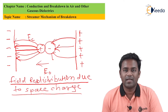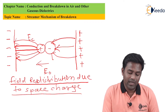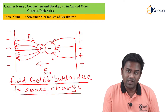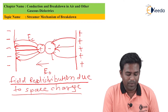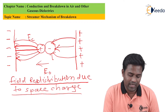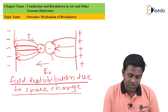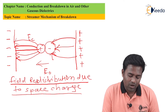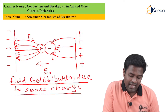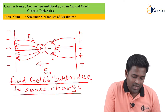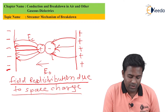We will see how streamer mechanism or channel mechanism will happen using this diagram. There will be two electrodes: anode and cathode. Anode is represented by a plus sign and cathode by a minus sign. When collision occurs, there will be one positive ion and one negative ion. The field redistribution due to space charges occurs — positive ions are attracted toward the cathode, as shown in this diagram.